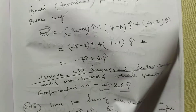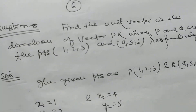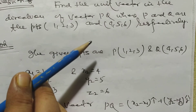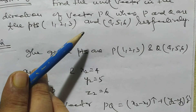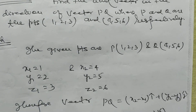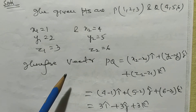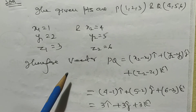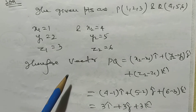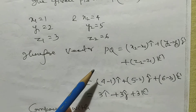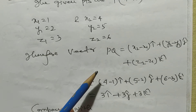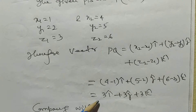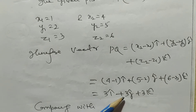Problem number 8: find the unit vector in the direction of vector PQ, where P and Q are the points (1, 2, 3) and (4, 5, 6) respectively. So x₁=1, y₁=2, z₁=3, x₂=4, y₂=5, z₂=6. Therefore, vector PQ = (4−1)i + (5−2)j + (6−3)k = 3i-cap + 3j-cap + 3k-cap. The magnitude |PQ| = √(9+9+9) = 3√3.